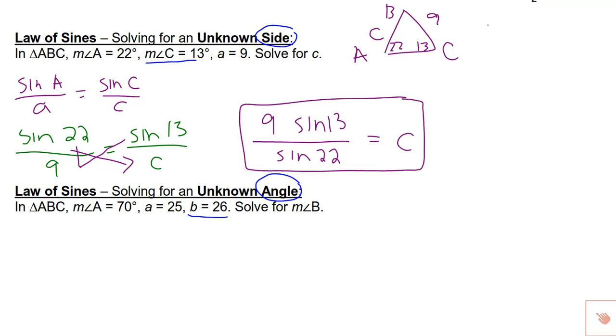At this point you can just go ahead and plug this into your calculator. If they ask you for a rounded answer pay attention to how far they want you to round to. If they ask you for an exact answer you would leave it like this. When I plug this into my calculator I get that side c is 5.4.